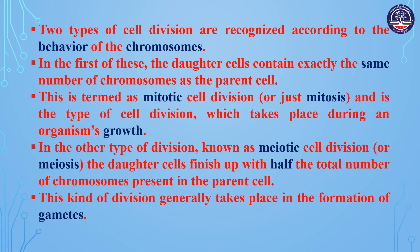Two types of cell division are recognized according to the behavior of the chromosomes. In the first of these, the daughter cells contain exactly the same number of chromosomes as the parent cell. This is termed mitotic cell division, or just mitosis.